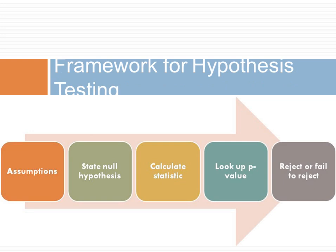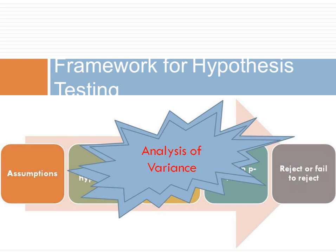So if we want to compare means of three groups, we follow our framework for hypothesis testing. Recall that the framework starts with testing of assumptions, stating the null hypothesis, calculating the statistics, looking up the p-value, and rejecting or failing to reject. We want to use this framework in the context of one-way analysis of variance, and the following lecture shows you how to do so.